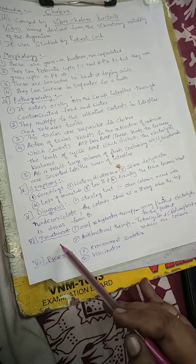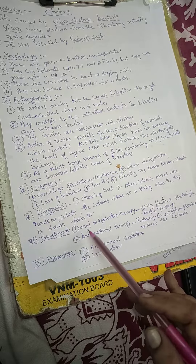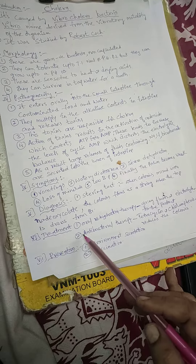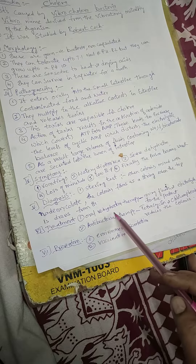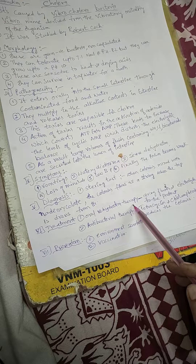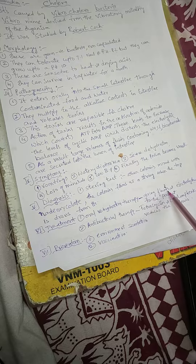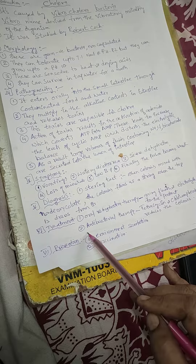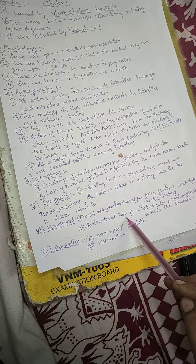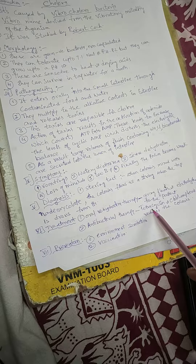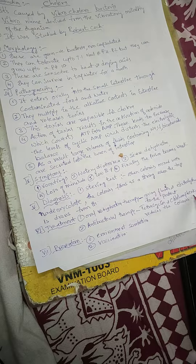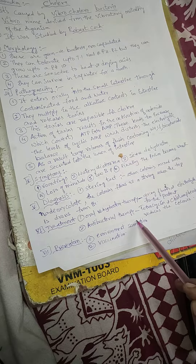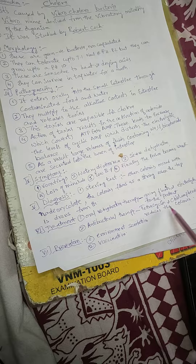The sixth point is treatment. There are two types of treatments. Number one is oral rehydration therapy — giving fluids and electrolytes to the patient. The second one is antibacterial therapy, where tetracycline and chloramphenicol drugs reduce the colonies of the bacteria.